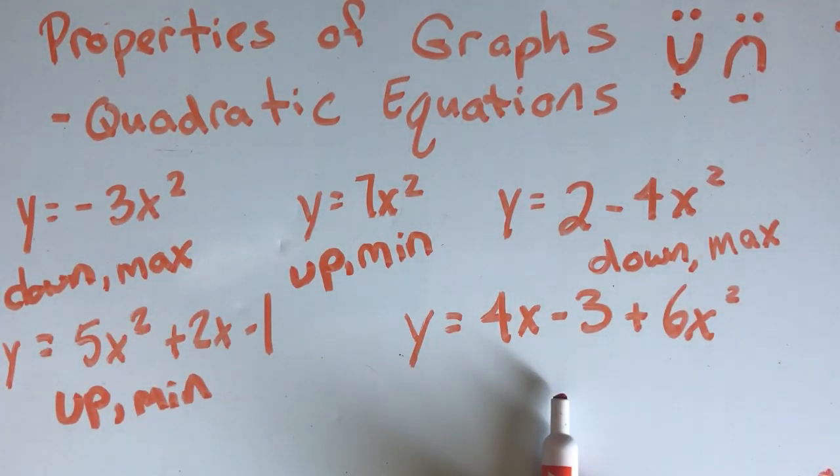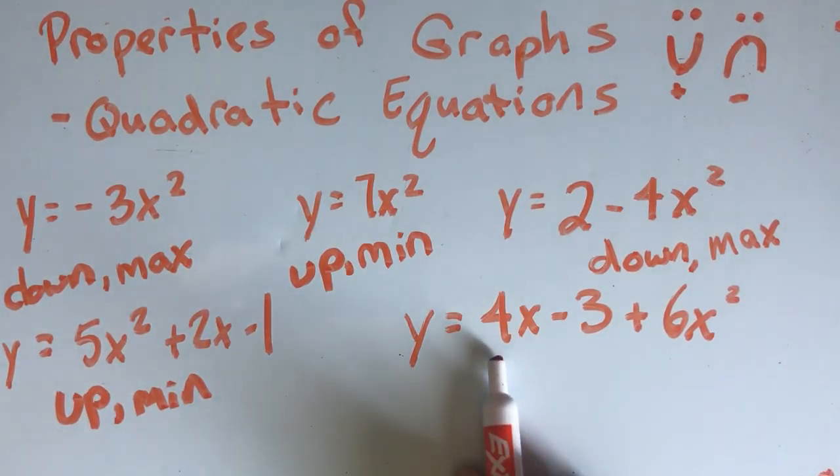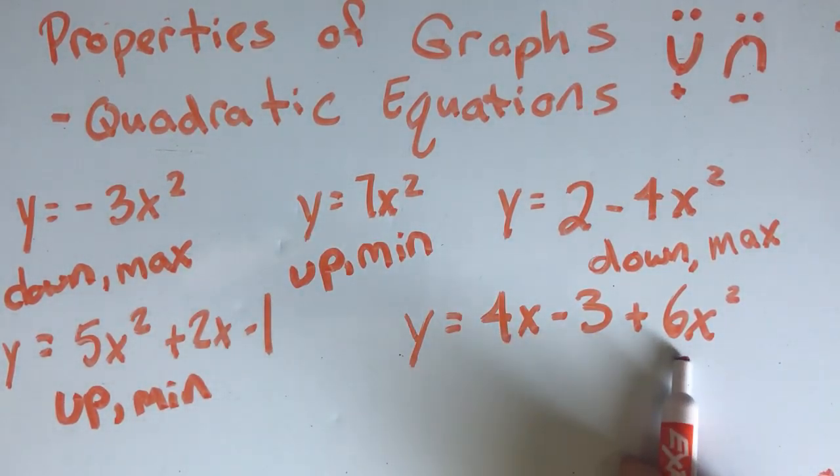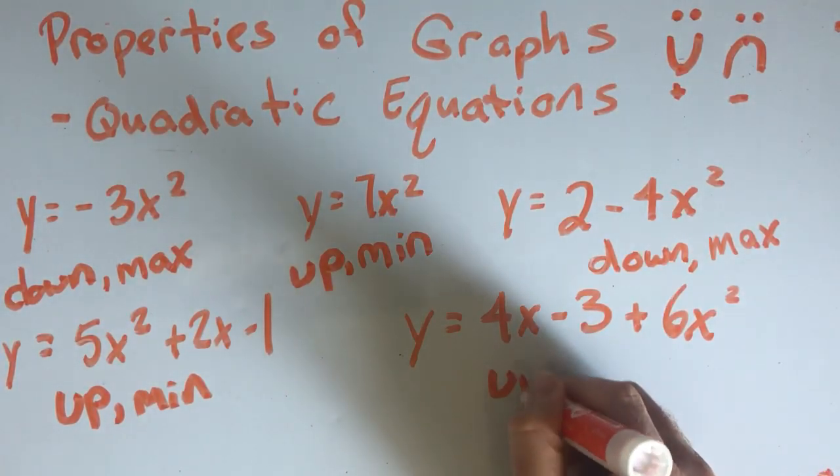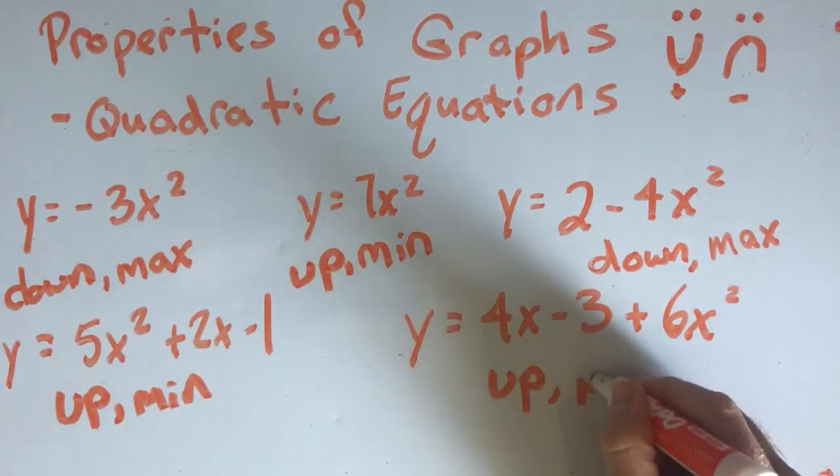Over here, let's look for the x squared. Oh, that's tricky. That's 4x. x squared is here. It's 6. So that's positive. Positive opens up. And up always has a minimum.